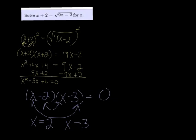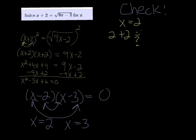However, with radical equations, you have to check. All right, so we're going to check x equals 2. And to do that, we plug it back into the original. So we get 2 plus 2 is equal to, and I'm going to put a little question mark there because we don't know, the square root of 9 times 2 minus 2.